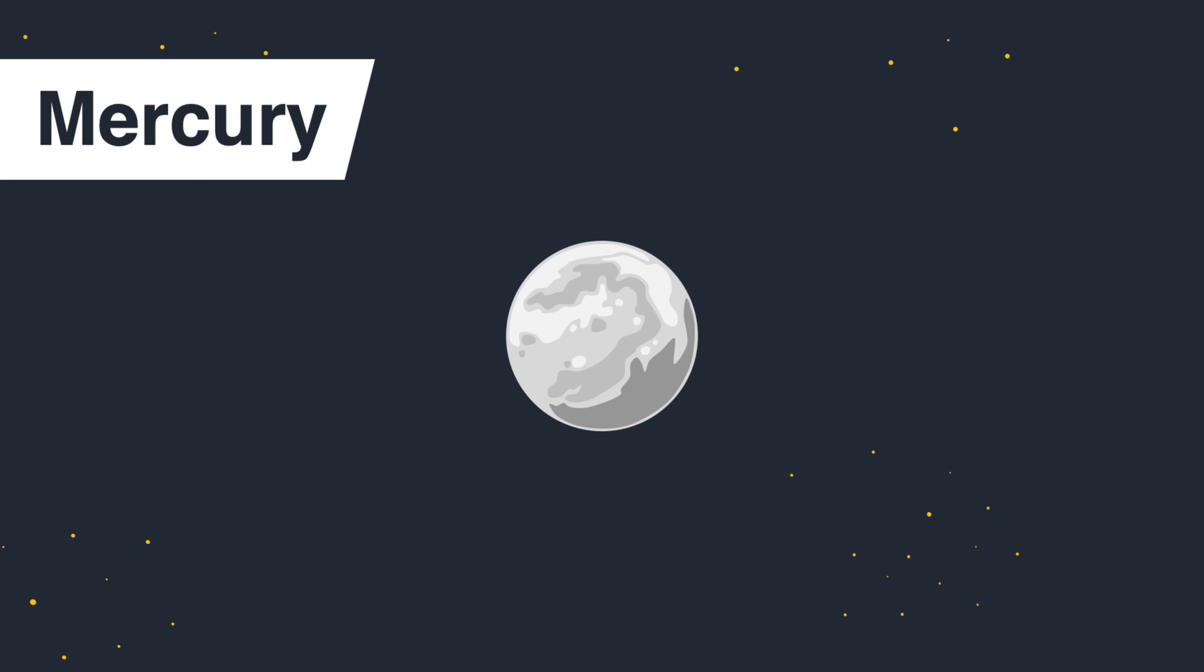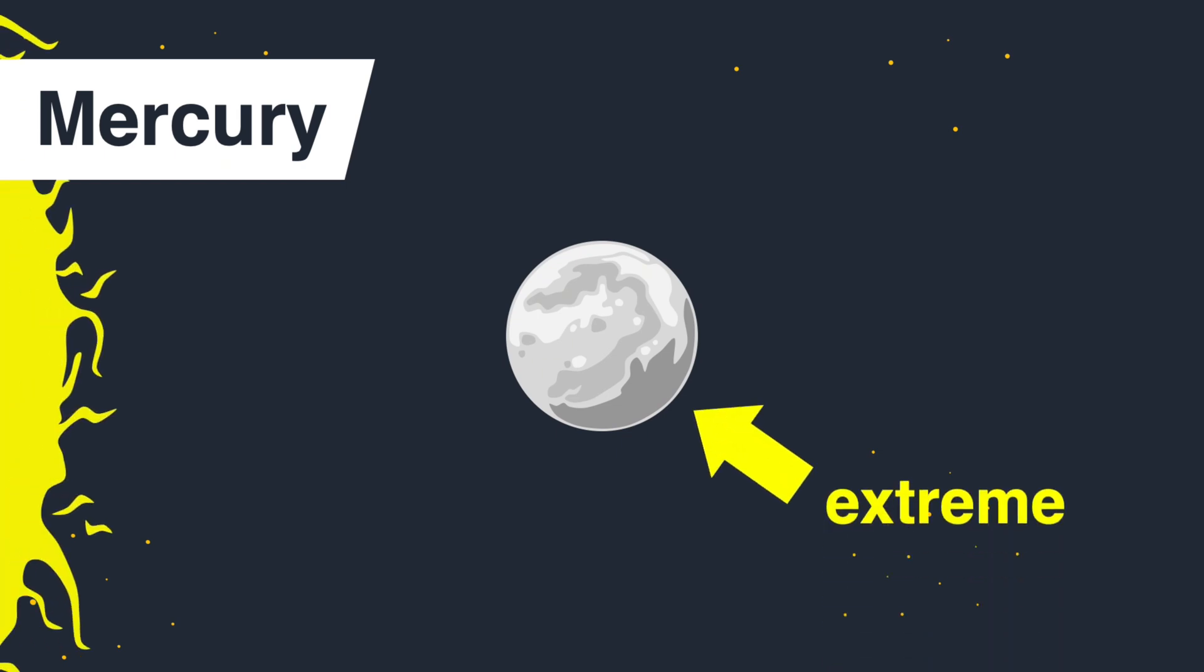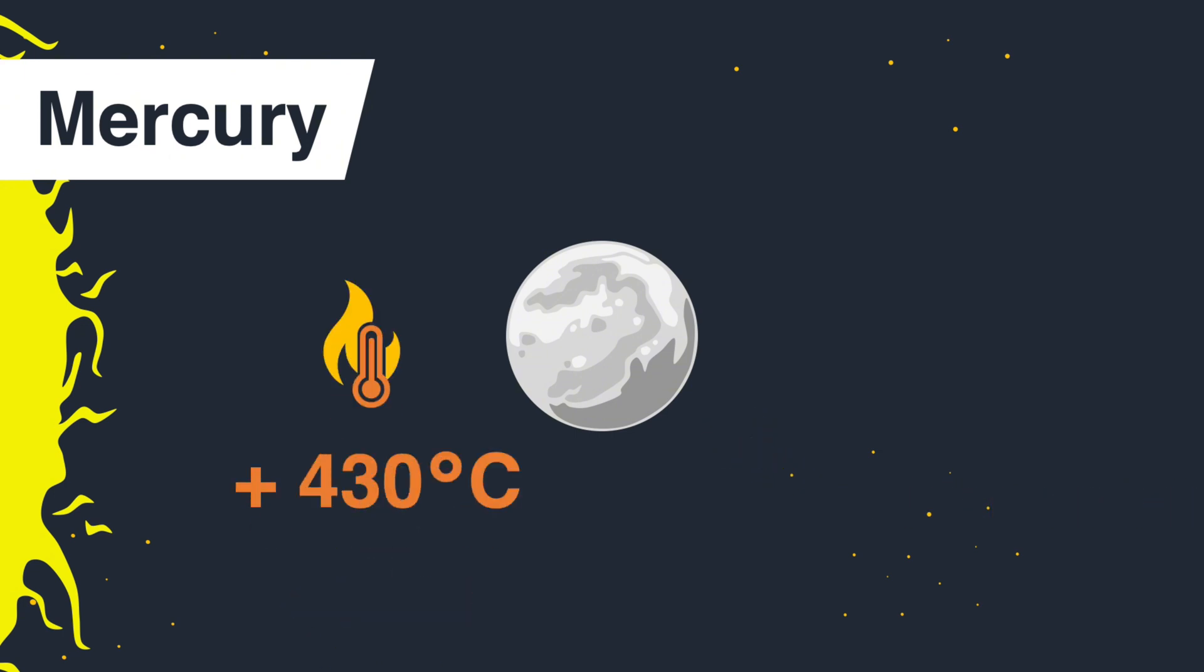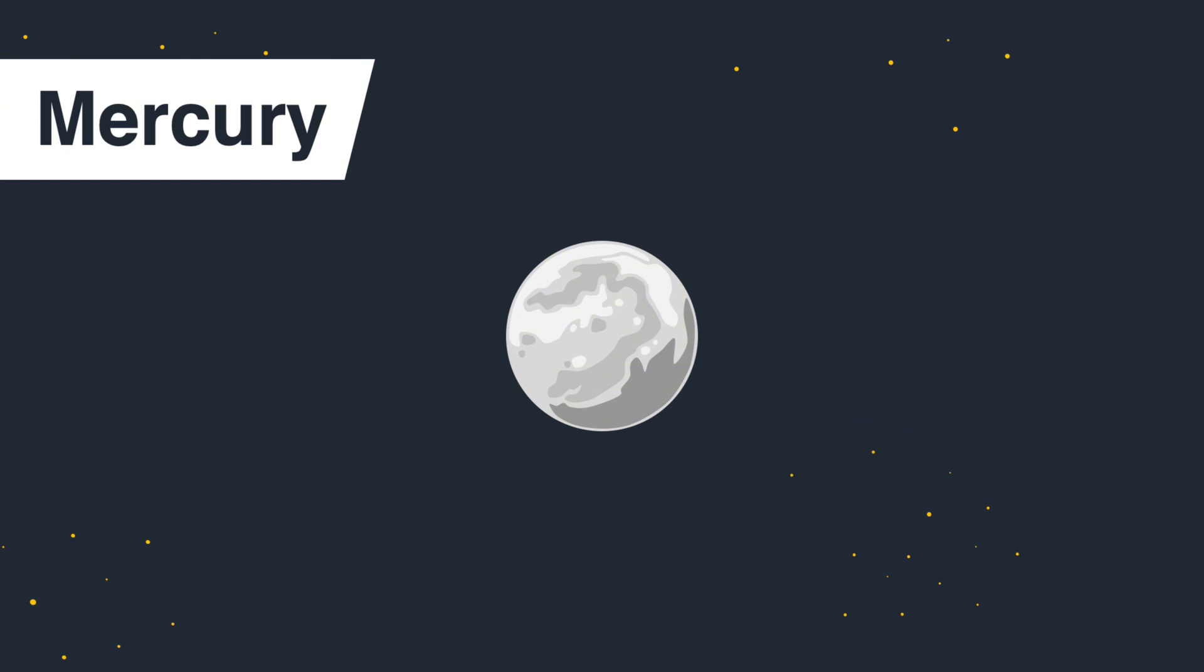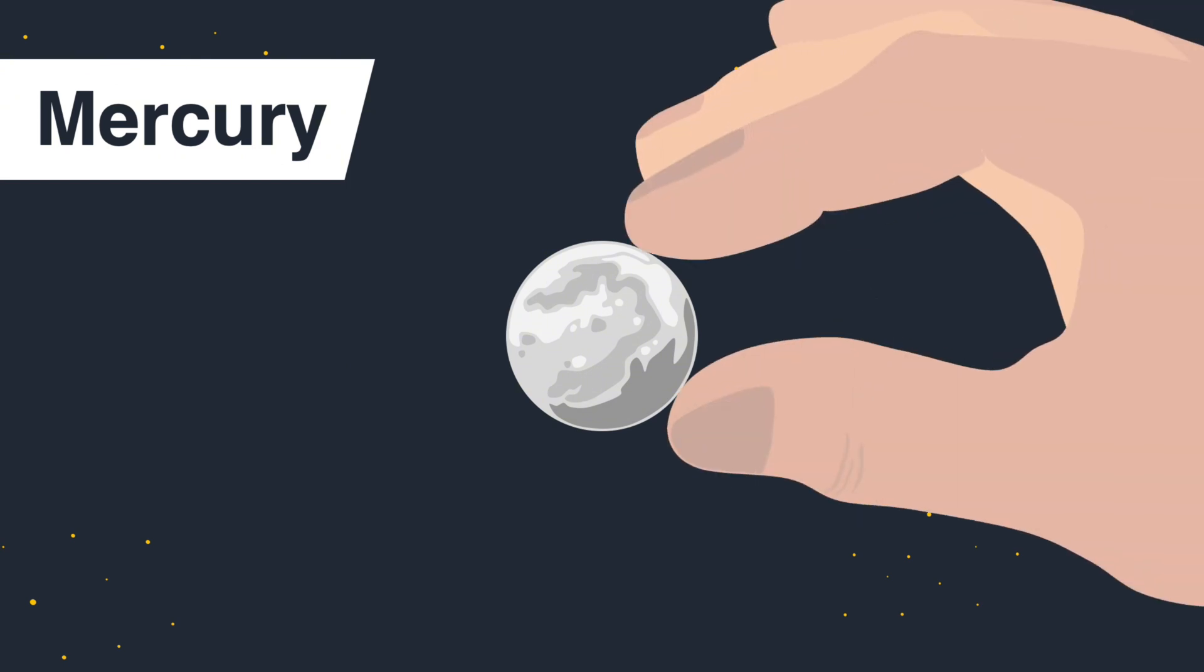So let's start our journey with Mercury. Mercury really is a planet of extremes. Closest to the sun, its surface temperatures can reach blistering daytime highs of 430 degrees Celsius. But as Mercury has no atmosphere, it cannot retain heat. During nighttime, the temperature can drop to freezing lows of minus 180 degrees. Mercury also is the smallest planet in our solar system.